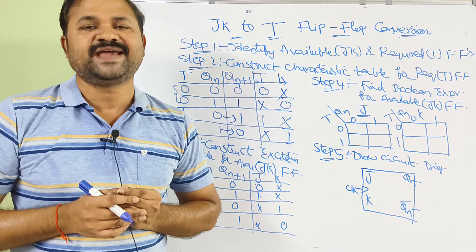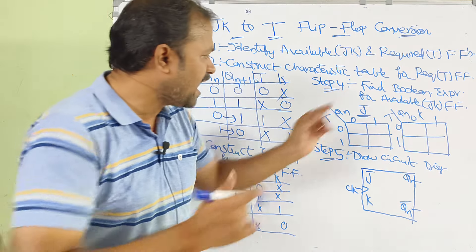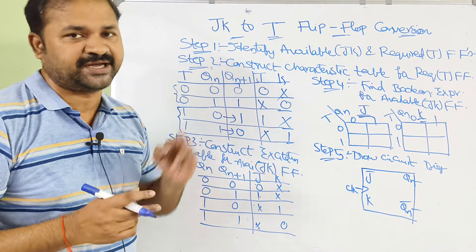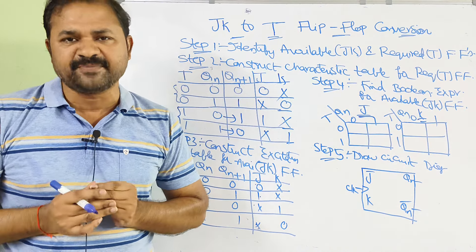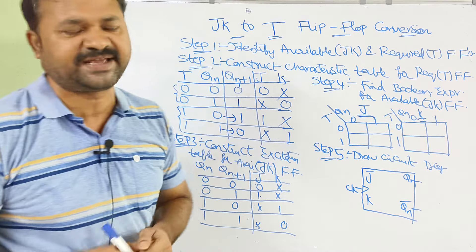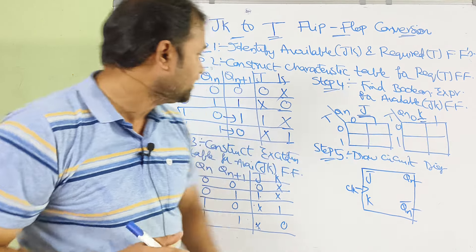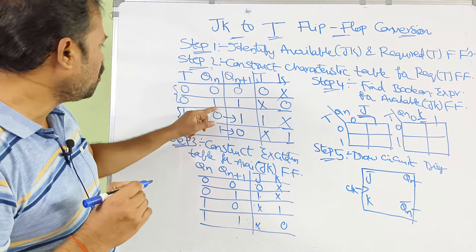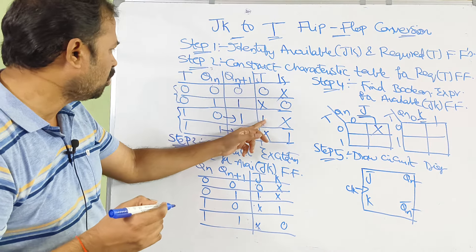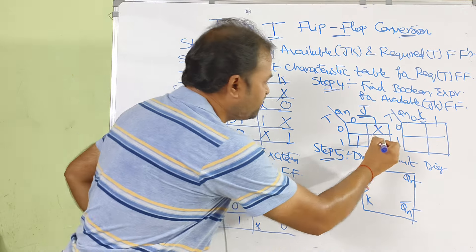Step 4: we have to find the Boolean expression for the available flip-flop, that is the JK flip-flop — specifically for J and K. Here we have 2 inputs, T and Qn, so a 2-variable Karnaugh map is enough. This is the Karnaugh map for J and this is the Karnaugh map for K. Observing the J column: for T=0, Qn=1, it is don't care; for T=1, Qn=0, it is 1; for T=1, Qn=1, it is don't care.